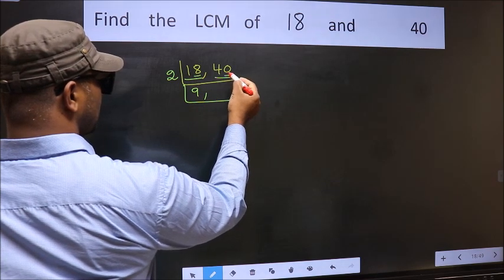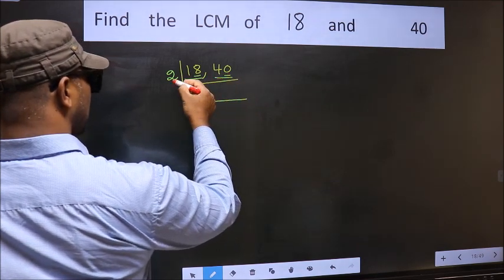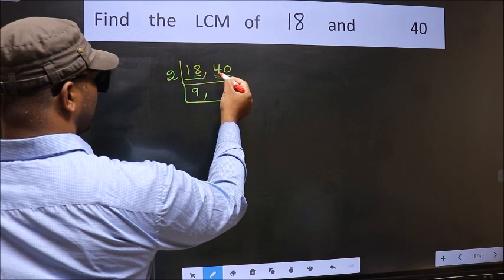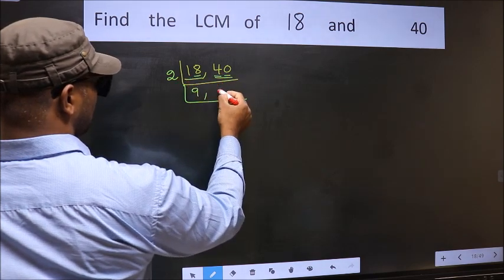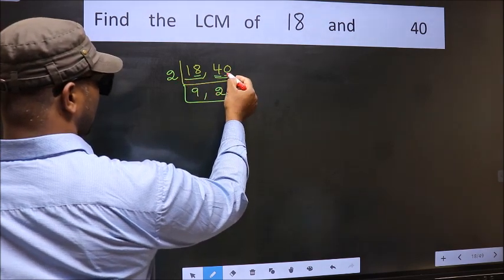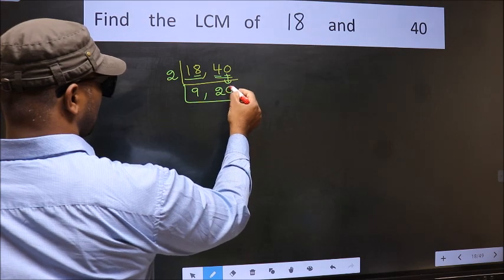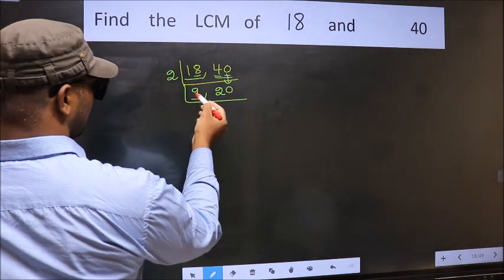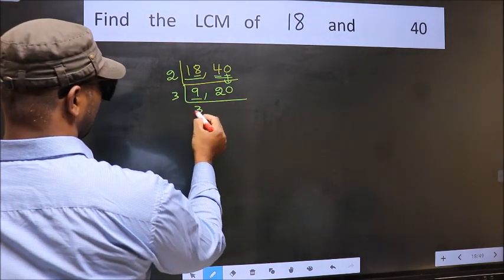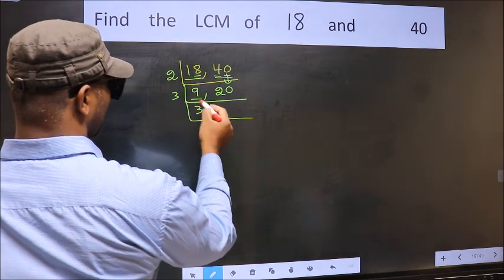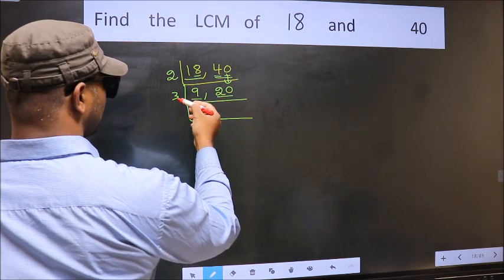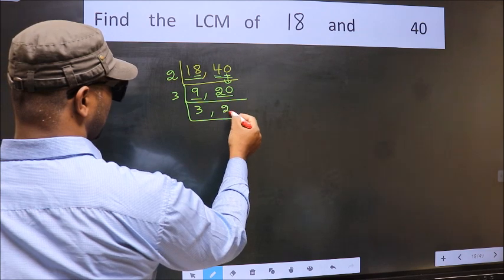The other number 40, last digit 0, so this is divisible by 2. First number 4, when do we get 4 in 2 table? 2 twos 4. Now this 0 as it is down. Here we have 9. 9 is 3 threes 9. The other number 20 not divisible by 3, so we write it down as it is.